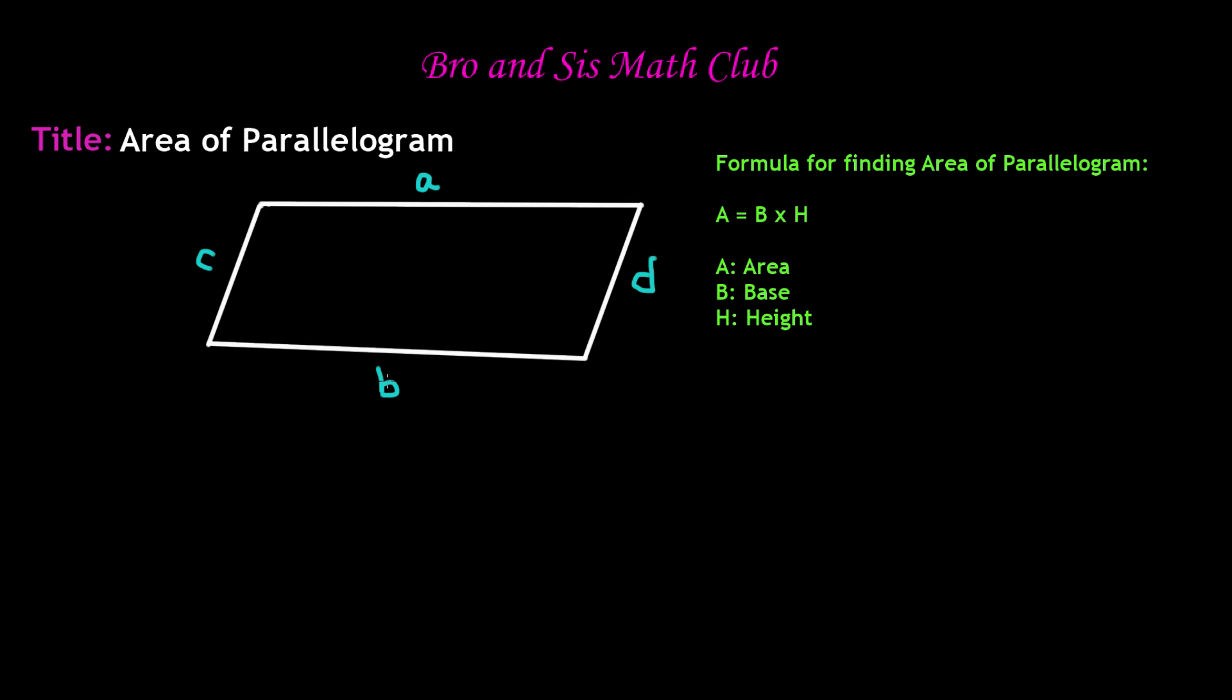In measurement, A and B have the same measurement and C and D have the same measurement. When we come to the formula for finding the area of a parallelogram, it is A equals B times H, which means area equals base times height. So we need to first indicate which is the base and which is the height.